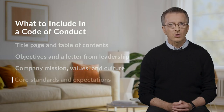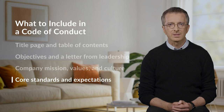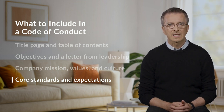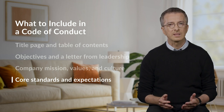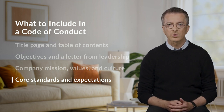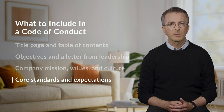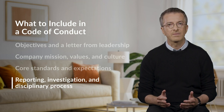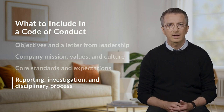Now you're ready to introduce the core standards and expectations. This is what the document is really about — it's where you cover the core expectations and provisions for employee conduct. For example, you might cover topics like harassment and discrimination, corruption and conflicts of interest, professional integrity, employment practices, and more. After the core standards and expectations, consider adding a section that explains your process for reporting, investigating, and disciplining code of conduct violations.